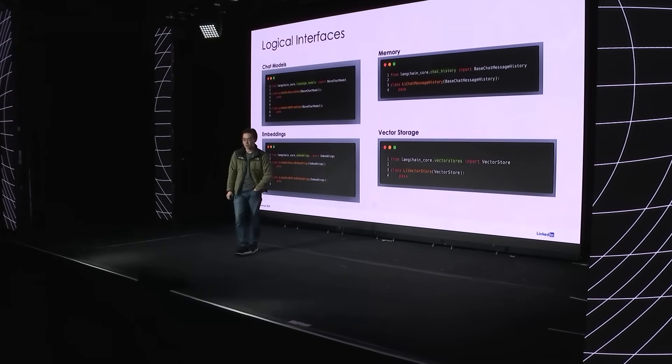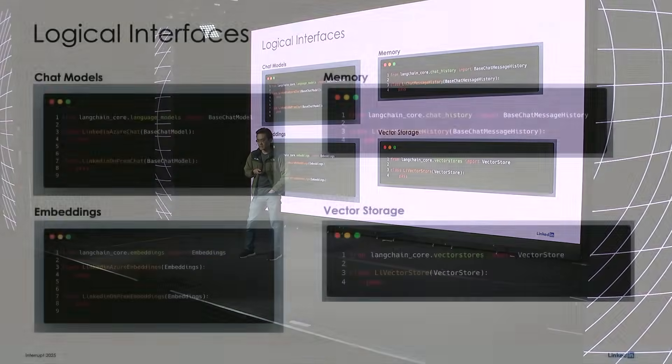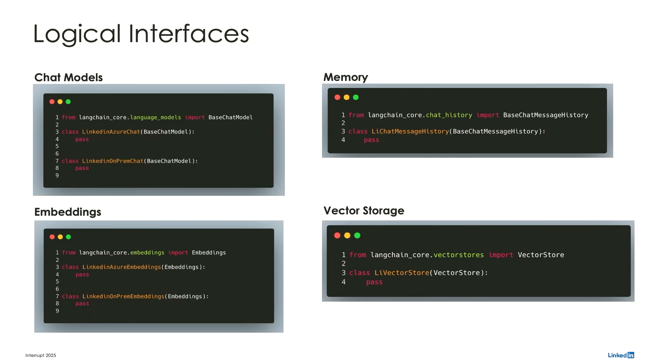The second thing we really appreciated — and I think we've heard similar themes from different speakers today — is that the LangChain and LangGraph packages have really sensible interfaces. We were able to model our internal infrastructure using these interfaces. For example, looking at the chat model interface here, LinkedIn uses Azure OpenAI but also uses on-premise large language models. So teams, if they want to switch between model providers, can do so with a couple lines of code.